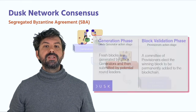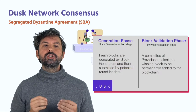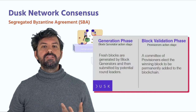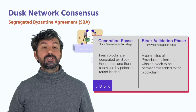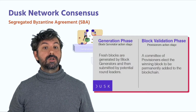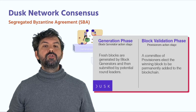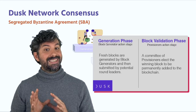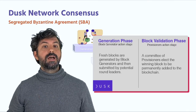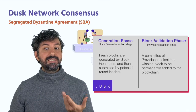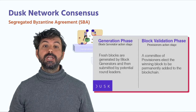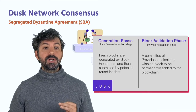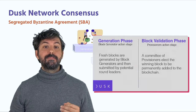During the block generation phase, potential round leaders submit their own block of transactions to the network. During the block validation phase, a committee of validators, called provisioners, elect the winning block to be added to the blockchain in a permanent and final manner.